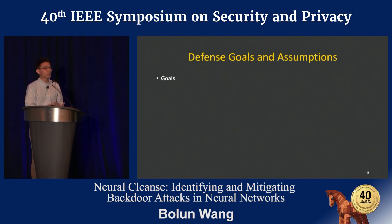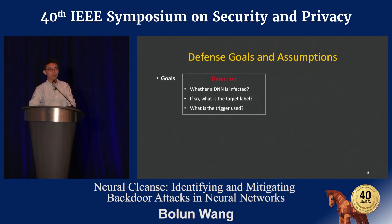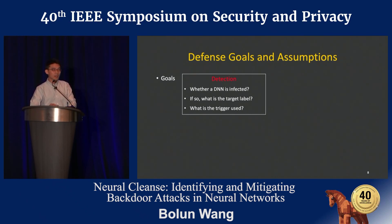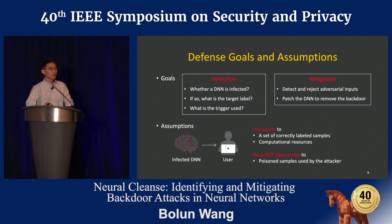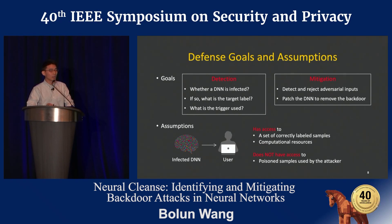What we want to do in this work is defend against this backdoor attack. The first step is to detect if there is any backdoor in the model — and if there is, we want to know which label is infected, which one is the target label, and what the actual trigger used by the attack is. After detection, we also want to mitigate the backdoor attack: detect and reject any possible sample that has the trigger in it, and patch the model to completely remove the backdoor. We assume that as a defender, we have access to a small set of clean samples, but we don't assume access to any poisoned samples.